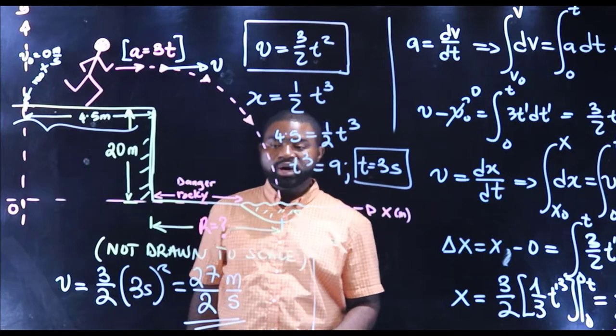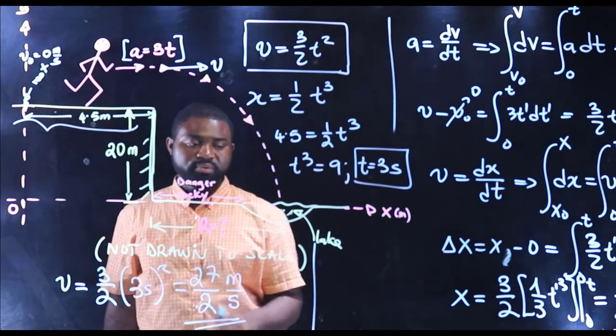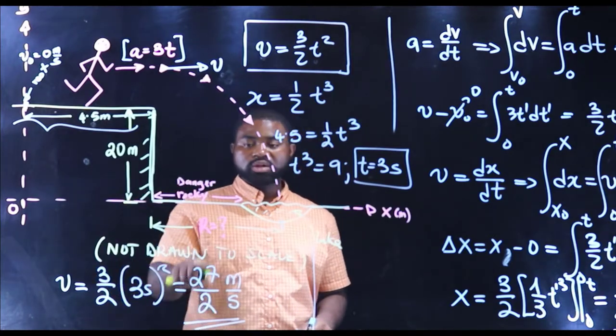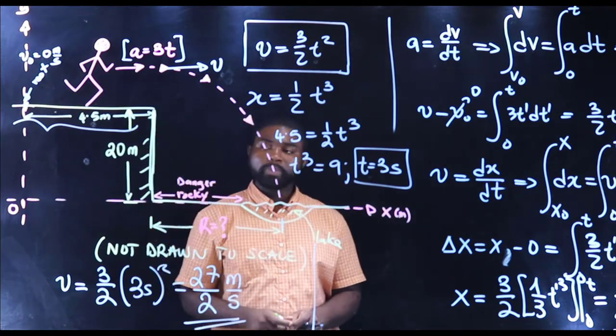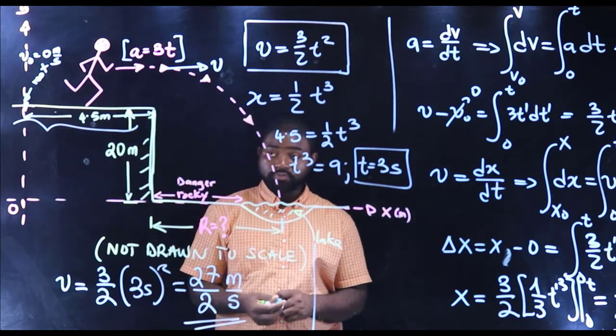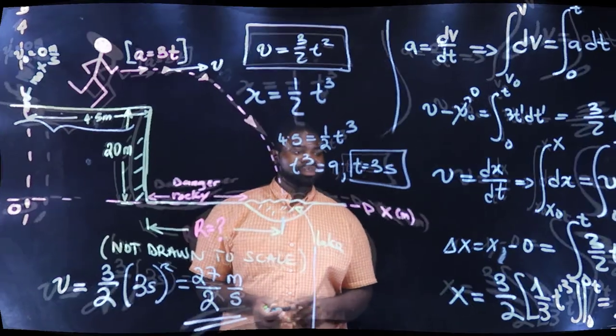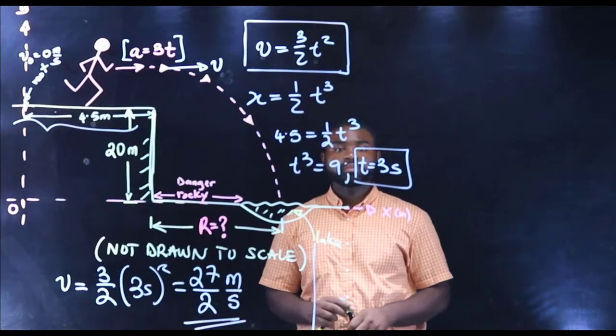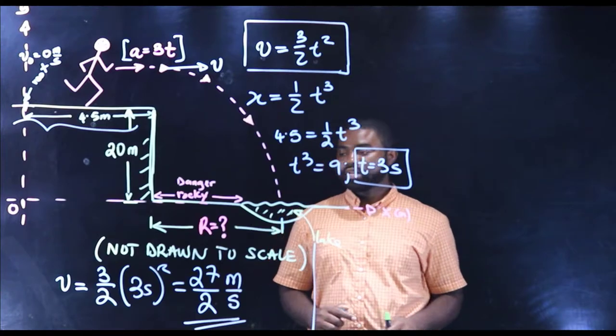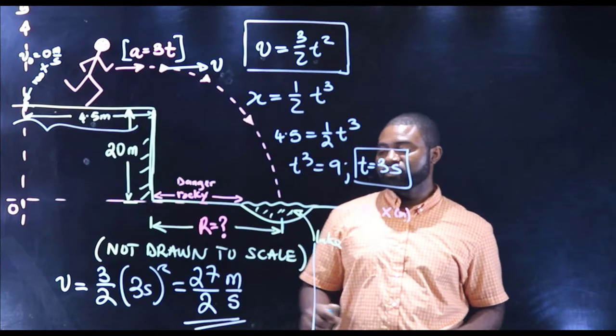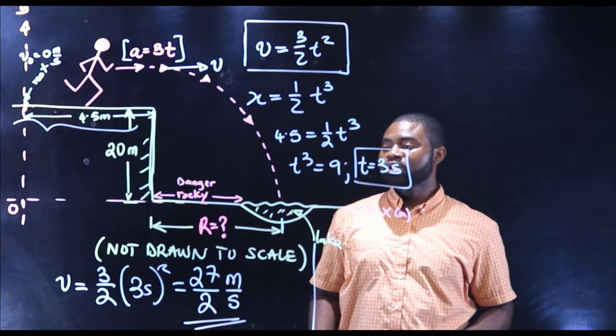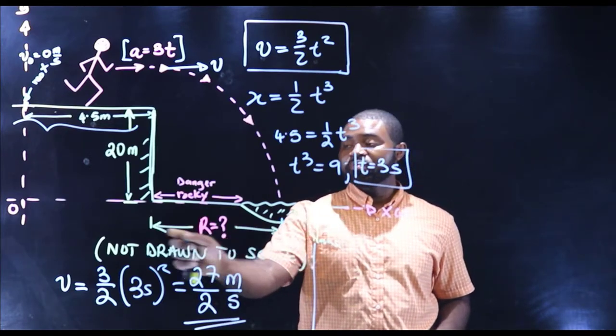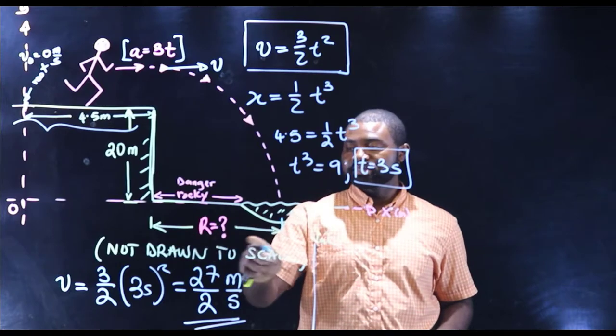But we are required to calculate R. And for us to calculate R, we need to know the time of flight. So we know that the initial velocity in the x direction is 27 over 2 meters per second. In order for us to calculate R, remember R is an x distance.